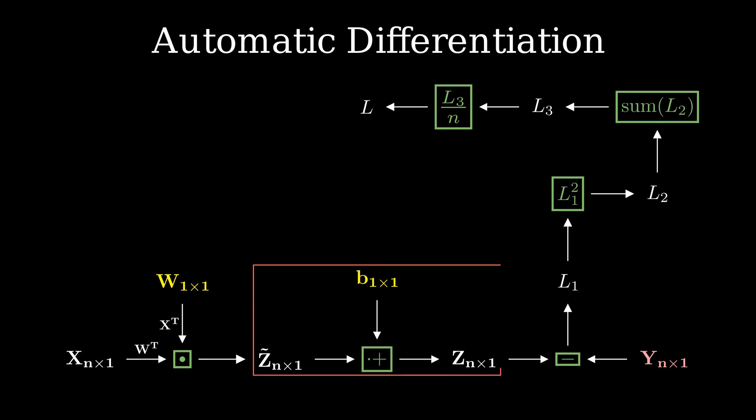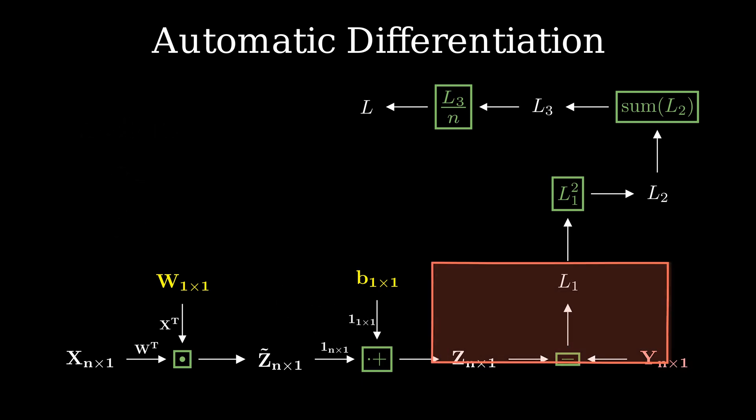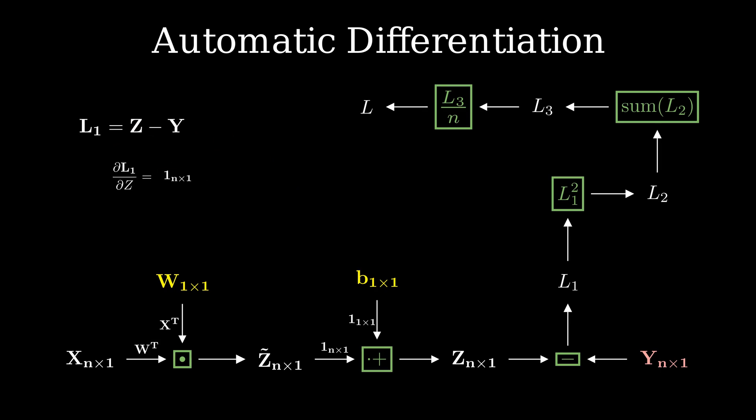This is a basic matrix calculus rule. Moving on to the addition of the bias term. Derivative of z with respect to z tilde is just a vector of length n and all entries as 1. This is a vector of 1 because notice that z tilde is a vector. Hence its derivative would also be a vector. On the other hand, derivative with respect to b is just a scalar 1.